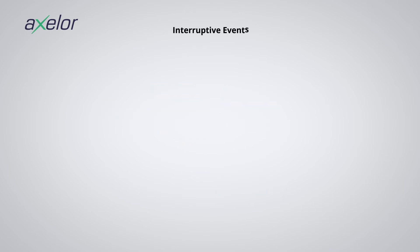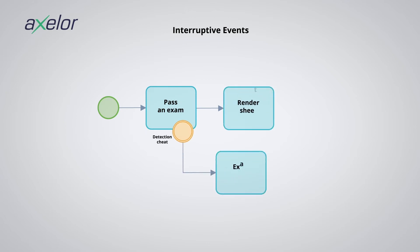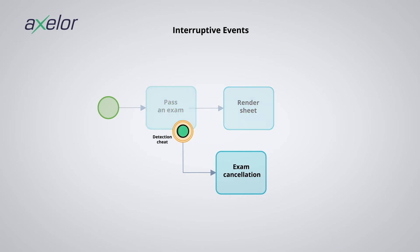Interruptive events: going back to the previous diagram, this time with an interruptive boundary event. When the token is on the 'take an exam' activity, if the boundary event is activated, the activity is deactivated and a new token is created at the boundary event, and the process continues on the 'cancel exam' activity. The 'pass exam' and 'cancel exam' activities cannot be activated simultaneously.